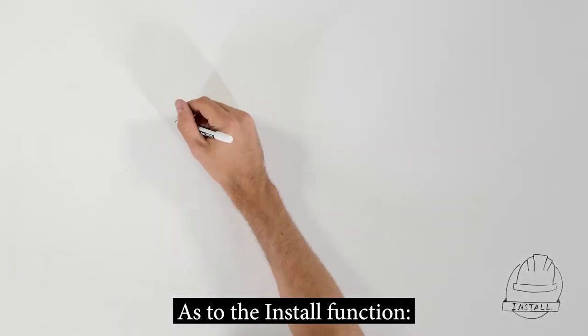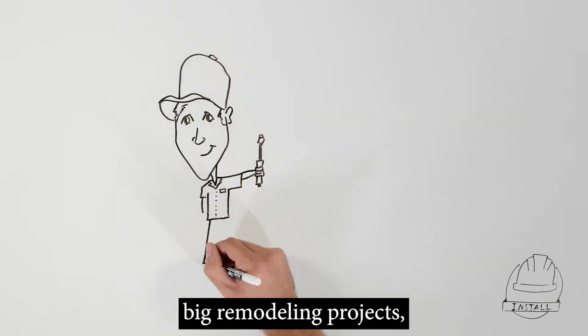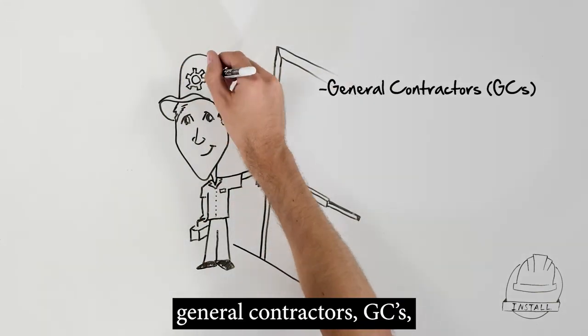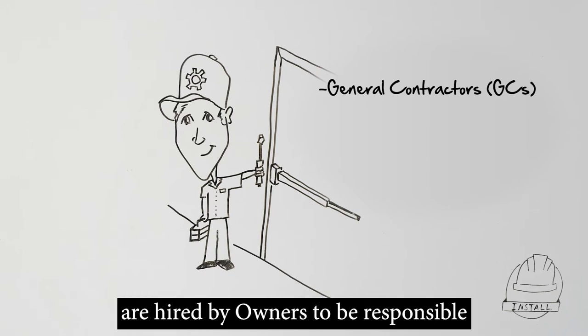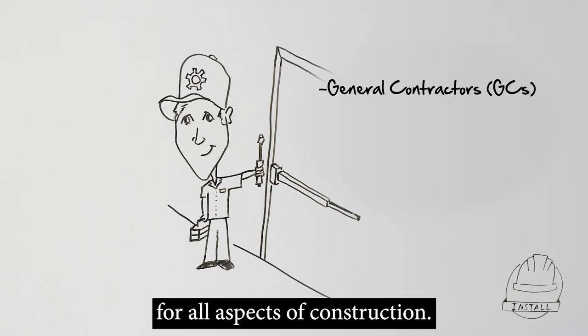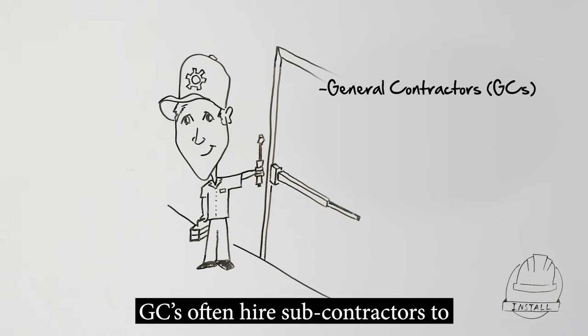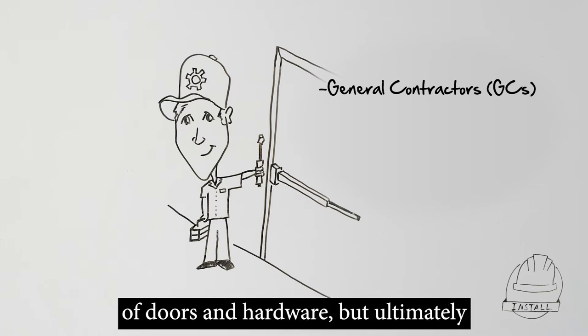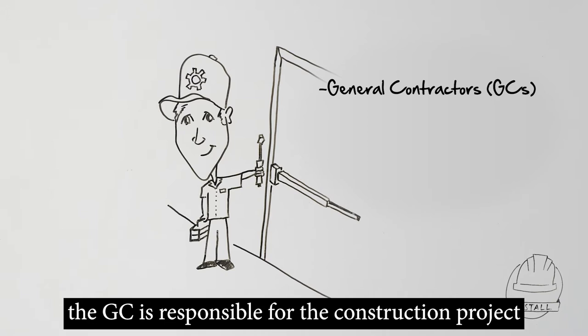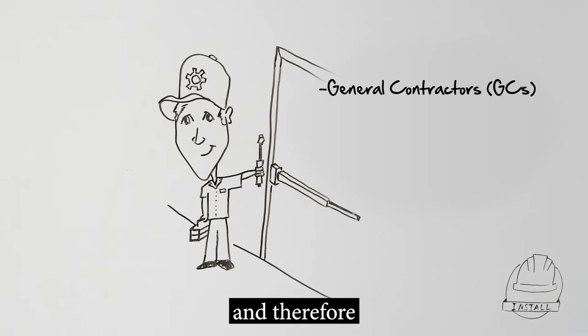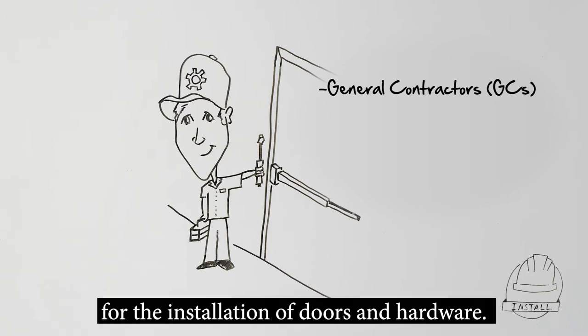As to the install function, for new buildings and many big remodeling projects, general contractors are hired by owners to be responsible for all aspects of construction. GCs often hire subcontractors to do some or lots of the installation of doors and hardware, but ultimately the GC is responsible for the construction project and therefore for the installation of doors and hardware.